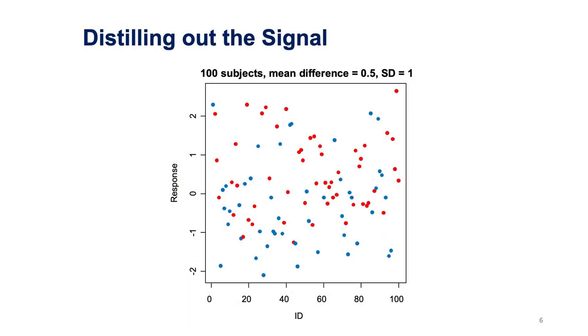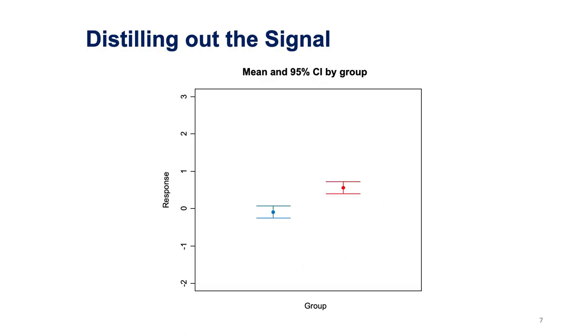Let's do the same exercise but take 100 subjects. The mean difference, again, is 0.5, and the standard deviation is 1. Now let's calculate the mean and the 95% confidence interval. We see that there is a distinct difference in the means, and that is the 0.5 that this data was simulated from. This shows that we need enough patients to distill the signal from the noise. If you have too few patients, you will not be able to see the signal, and it will just be clouded by the noise — by noise, we mean variation.